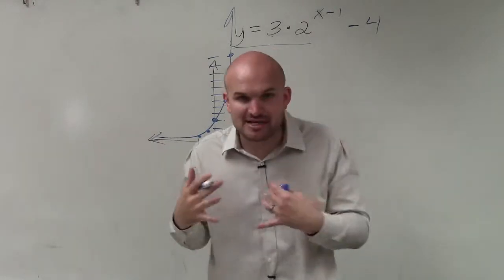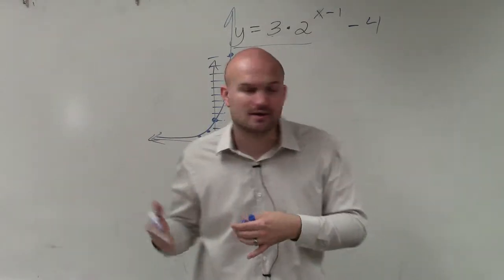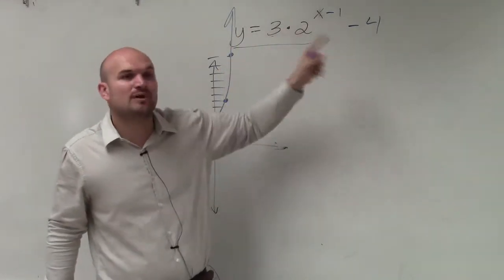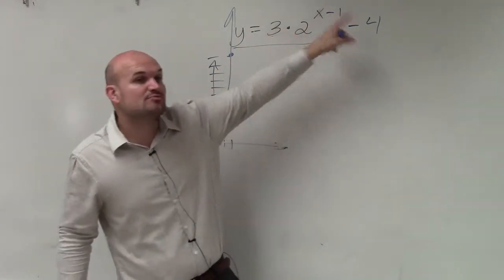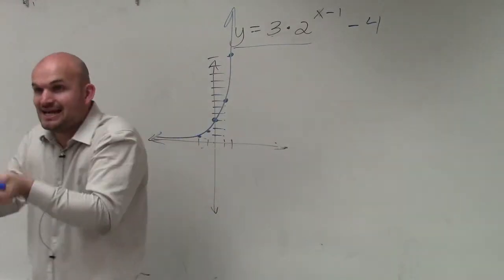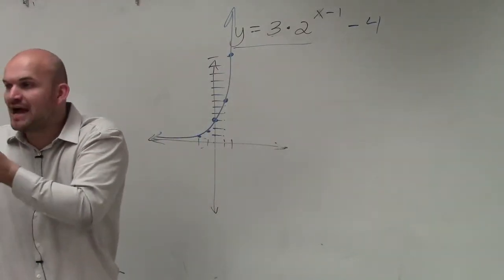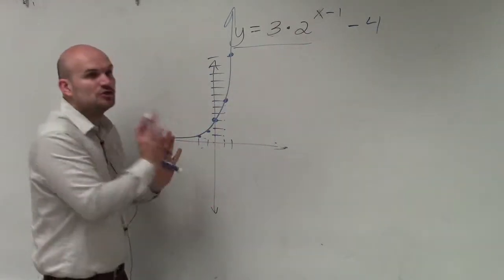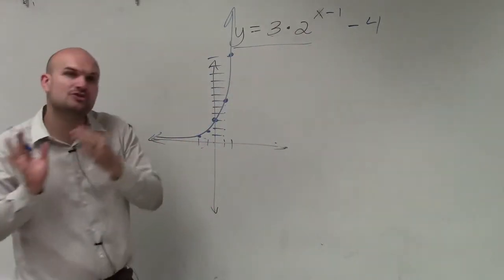To apply the transformations, we have to understand what the transformations are. When you look at this equation, y equals 3 times 2 to the x minus 1 minus 4, remember, when we're subtracting, when it's x minus h, we'll shift the graph left or right. Remember, it's always the opposite. So if it's minus 1, I am going to shift my graph one unit to the right.